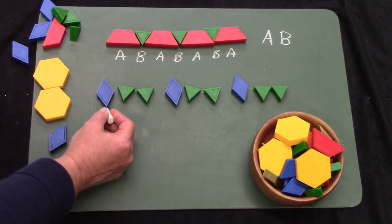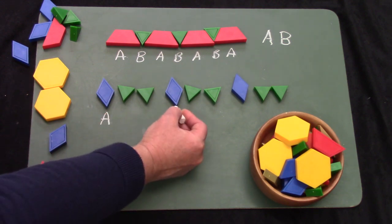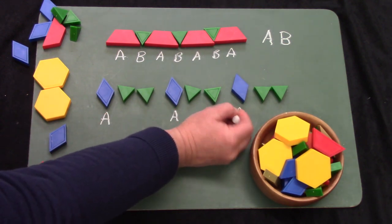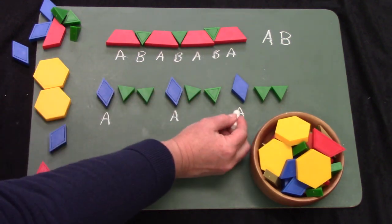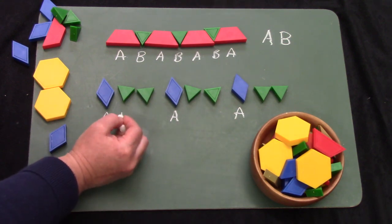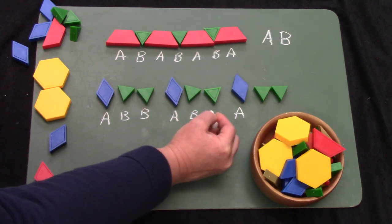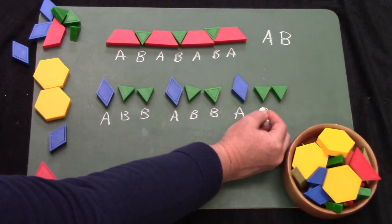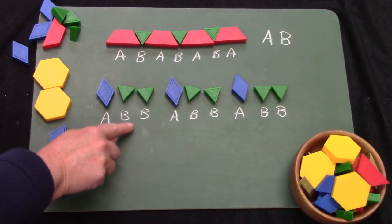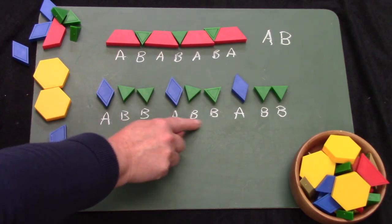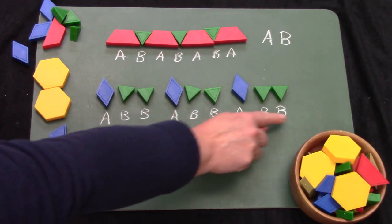We have an A, an A, and an A for our parallelograms, and then our triangles here are our Bs. This pattern would be A-B-B, A-B-B, A-B-B.